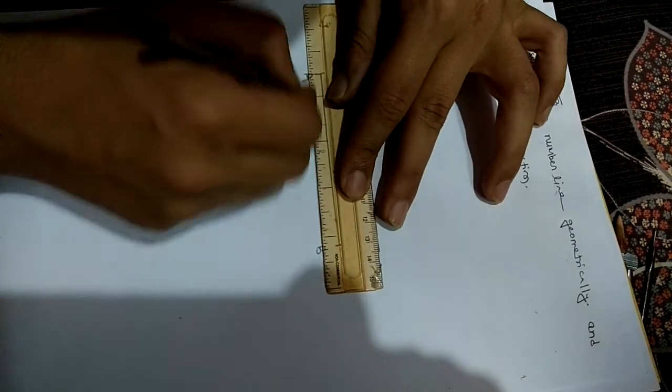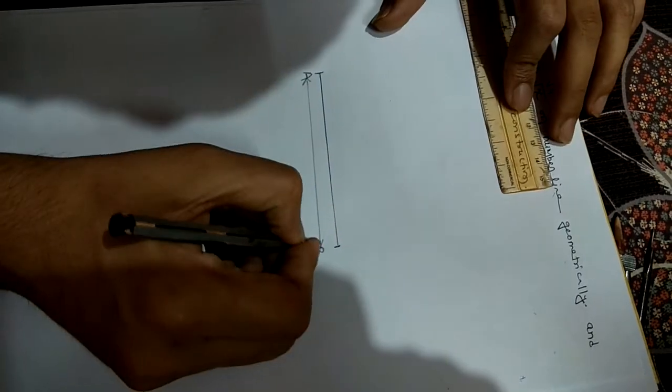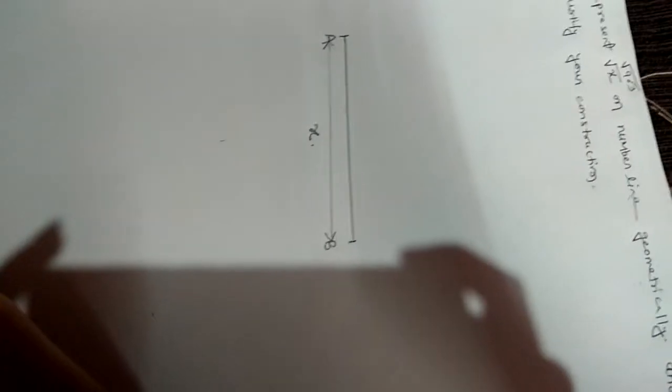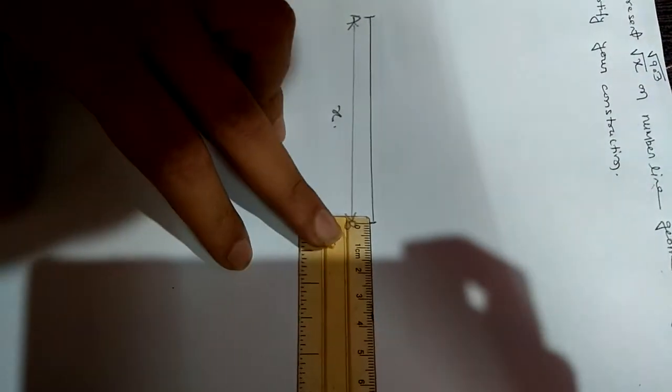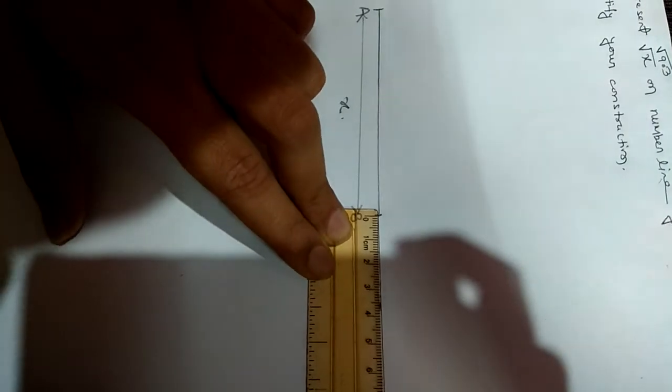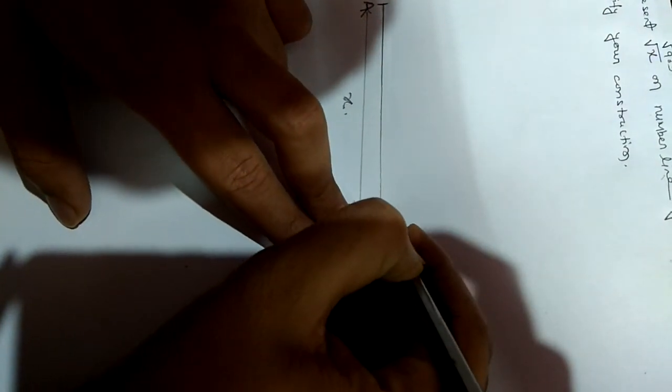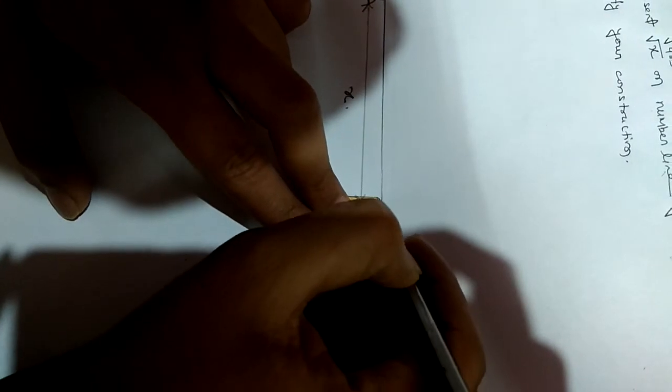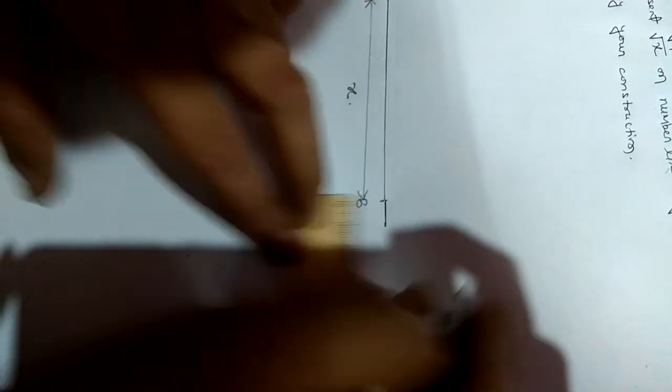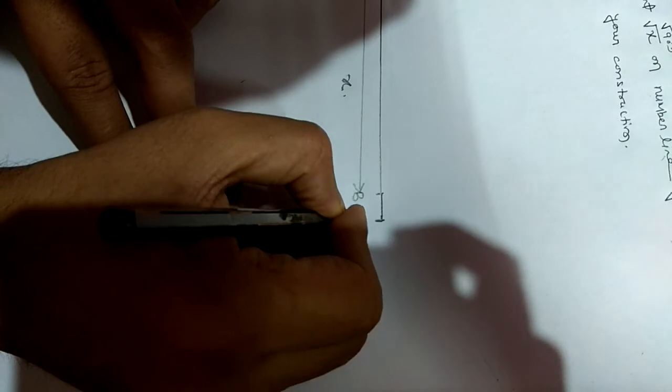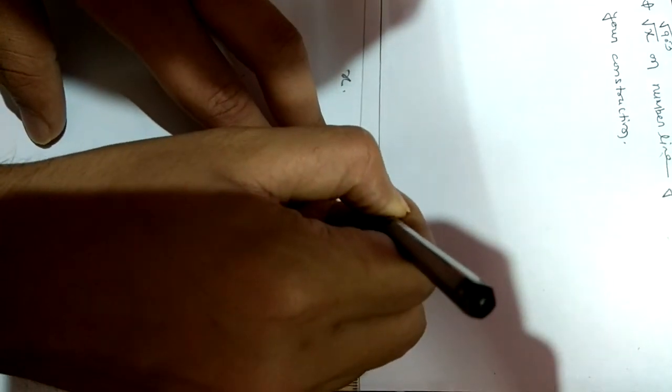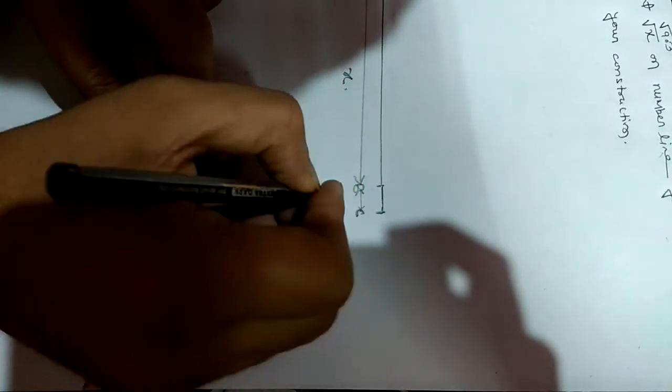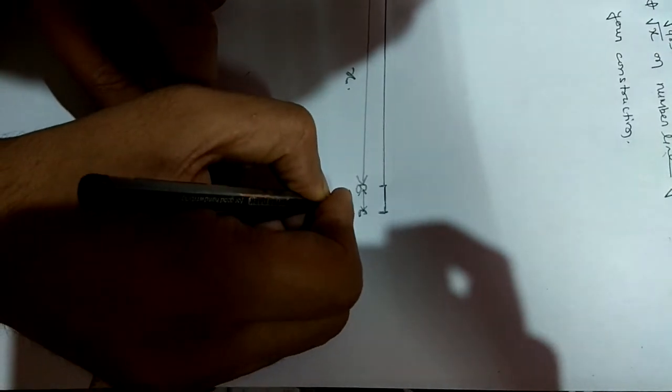Further, from point B we need to extend one centimeter. From B point, one unit, one centimeter we will mark. This BC length is one centimeter.